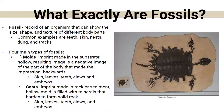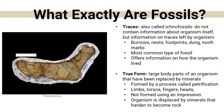A mold fossil is a negative image in the substrate — the impression is backwards. This could be anything from skin, leaves, teeth, claws, and even embryos. A cast fossil is an imprint in rock or sediment that was hollow at one point but has been filled in with minerals from the substrate or soil and hardened to form a solid rock. Again, this could include skin, leaves, teeth, claws, and embryos.